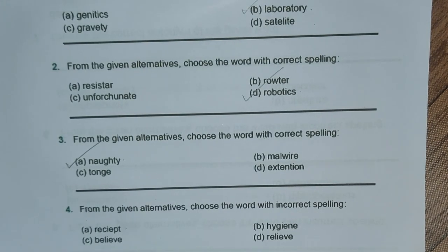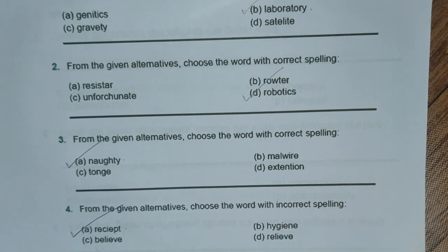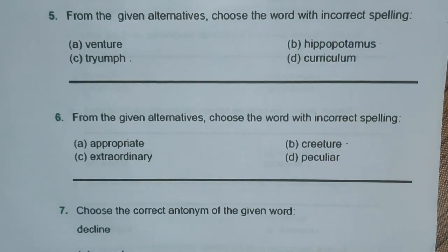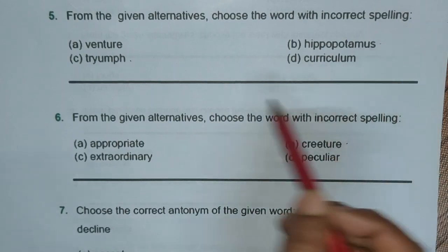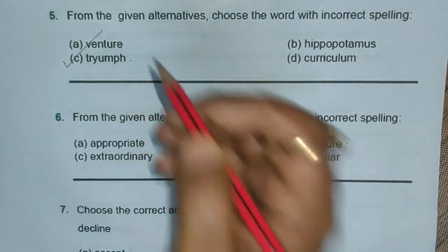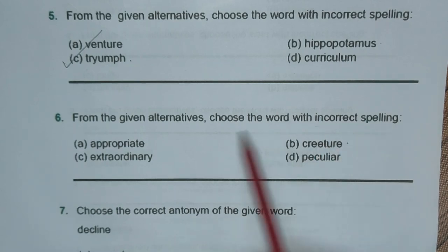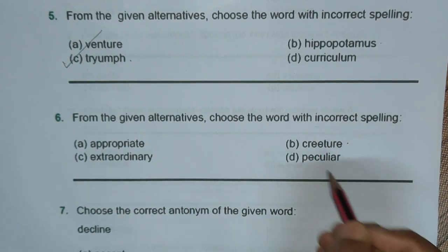Question four: from the given alternatives, choose the word with the incorrect spelling. We are now looking for incorrect spelling, and option A has the incorrect spelling, so we will mark it as the answer. Question five: again looking for incorrect spelling — option C with 'triumph' has the incorrect spelling. Question six: again incorrect spelling — 'creature' spelling is wrong, so that is the answer.